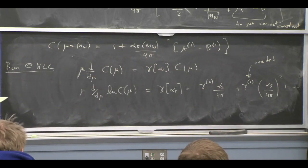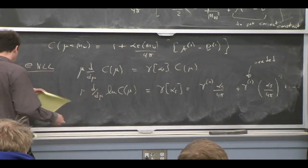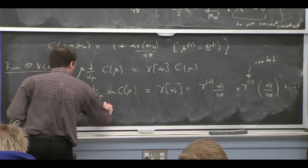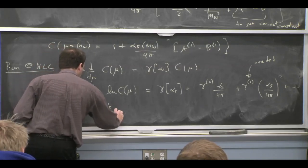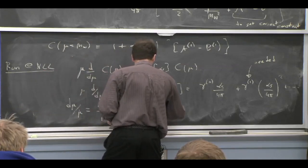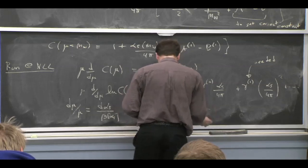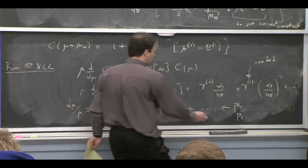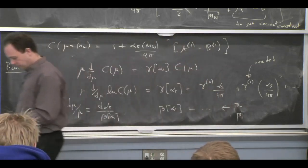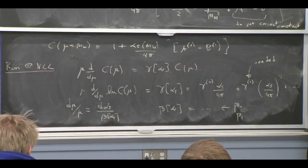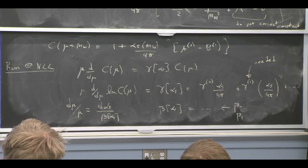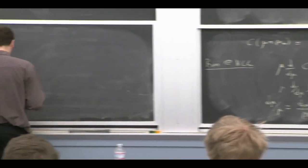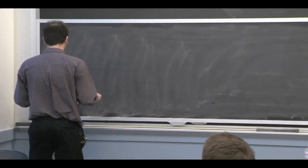The structure of the series has a zeroth-order term and then a higher-order term. We need the two-loop coefficient — we need gamma_1. This is a coupled differential equation, and we would solve it by using d μ/μ = d α/β(α). We would write down beta to one higher order, keeping not just the coefficient beta_0 but also beta_1. Rather than focus on the calculations, I want to focus more on the results and implications.